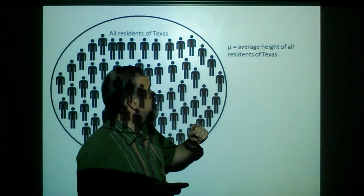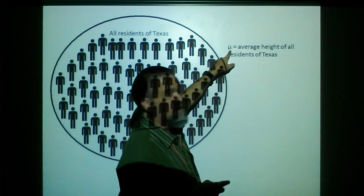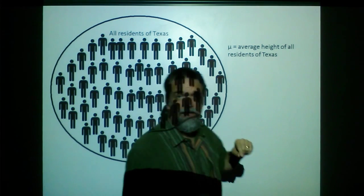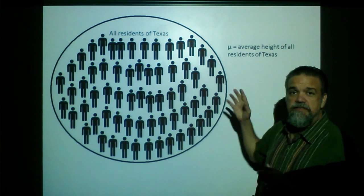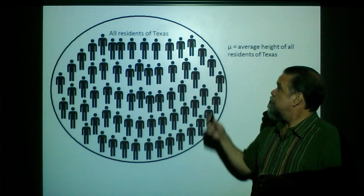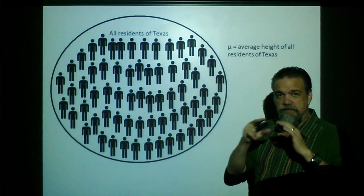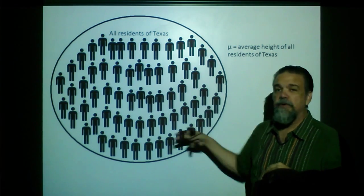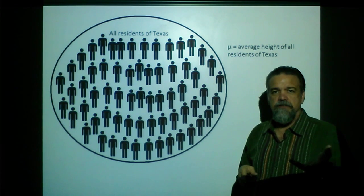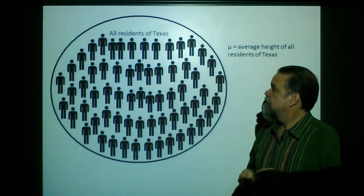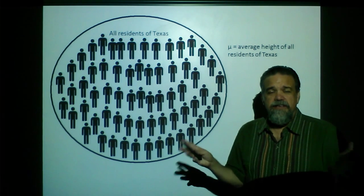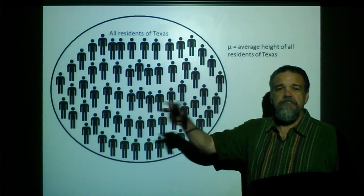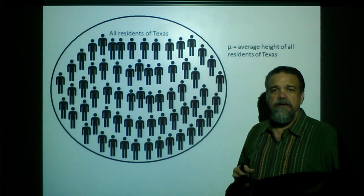There is a number that is the average height of all the residences in Texas, and I'm gonna give it the symbol mu. This is a Greek letter, it's the equivalent of an M, and so I'm gonna say that that's the average height. We frequently use mu to stand for the population, the average of the population, because it's a Greek M and it stands for mean. Now, can I do this? No, I can't do this. How am I gonna go around to every single person who lives in Texas and measure their height? That's impossible.